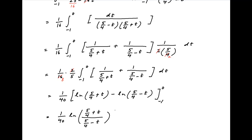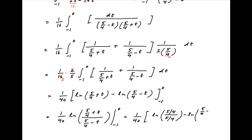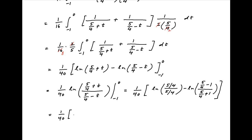This equals 1 upon 40 times ln[(5 upon 4 plus t) divided by (5 upon 4 minus t)] with limits of t from minus 1 to 0. Putting in the limits, we get 1 upon 40 times [ln(5 upon 4 divided by 5 upon 4) minus ln((5 upon 4 minus 1) divided by (5 upon 4 plus 1))]. This equals 1 upon 40 times [ln 1 minus ln(1 upon 4 divided by 9 upon 4)]. Since ln 1 equals 0, the value of the integral is minus 1 upon 40 times ln(1 upon 9).